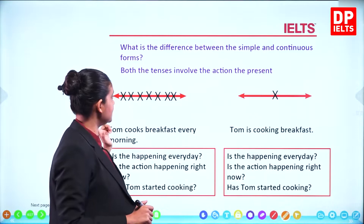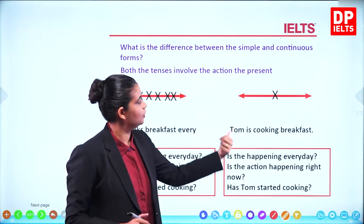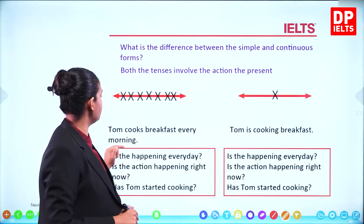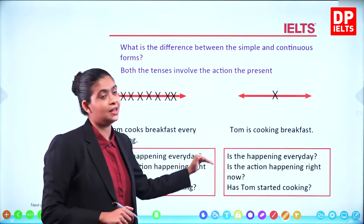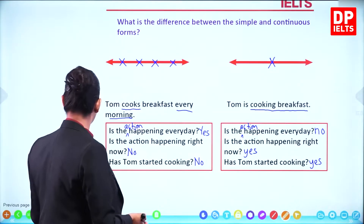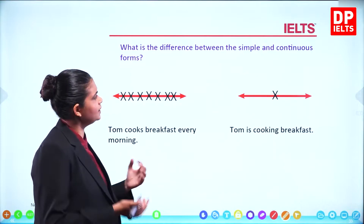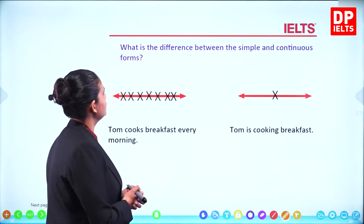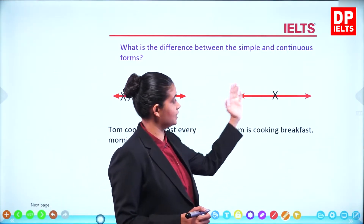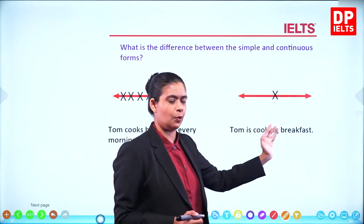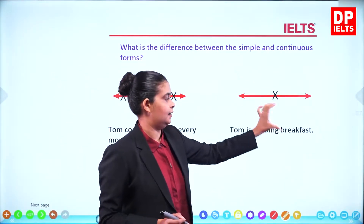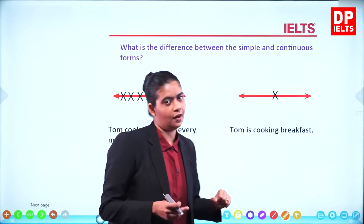Both tenses involve an action which is in the present. 'Tom cooks breakfast every day' - the action happens every day. So moving on, what is the difference between the simple and continuous forms? Here you can see it happens every day, whereas here it is at the time of speaking. The present simple describes a repeated action, while the present continuous describes something happening at this moment.